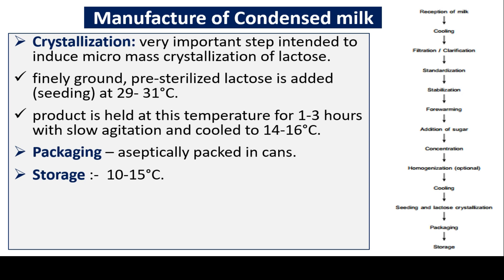The product is held at 29–31 degrees Celsius for one to three hours with slow agitation, then cooled to 14 to 16 degrees Celsius. Condensed milk is aseptically packaged in cans and stored at 10 to 15 degrees Celsius. The manufacturing flow: reception, cooling, filtration, clarification, standardization, stabilization, warming, sugar addition, concentration, homogenization, cooling, seeding and lactose crystallization, packaging, and storage.